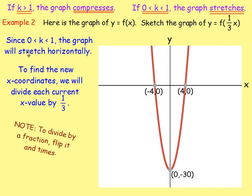So, with this one, because k is between 0 and 1, we know the graph is not going to compress. It's going to stretch this time. We have a third, so it will stretch. So to find the new x coordinates, we will divide the current x value, the current x coordinates, by 1 third. Quick recap, to divide by a fraction, we just want to flip it and times. So dividing by 1 third is the same as multiplying by 3.